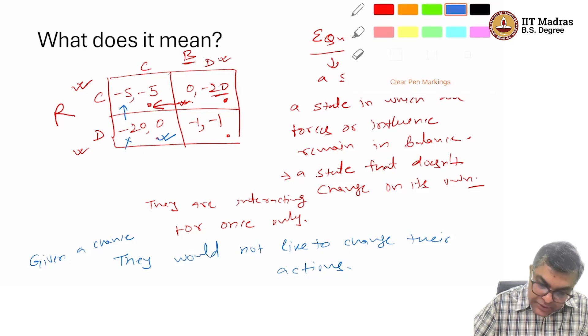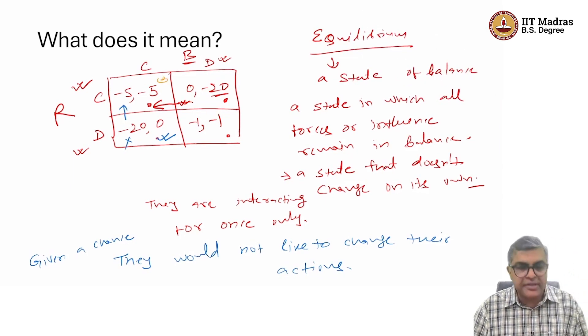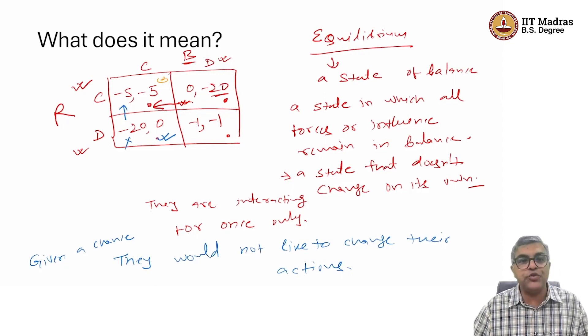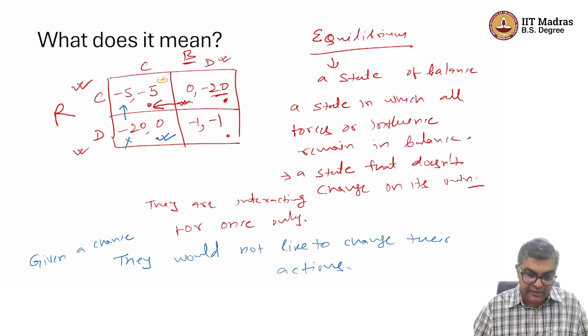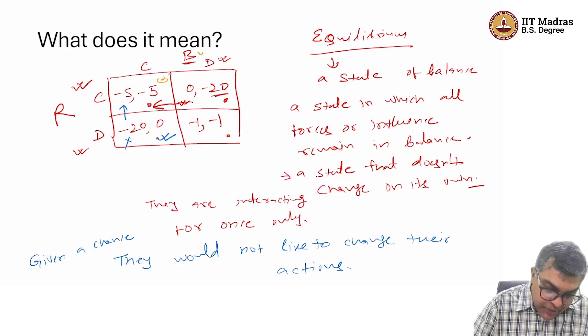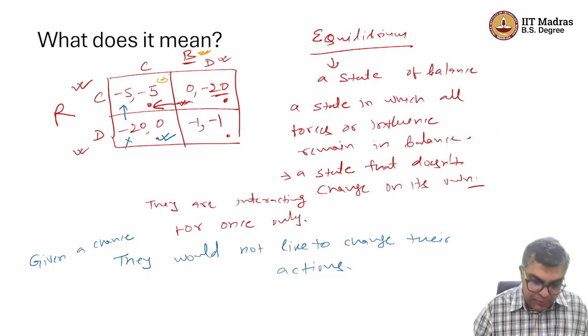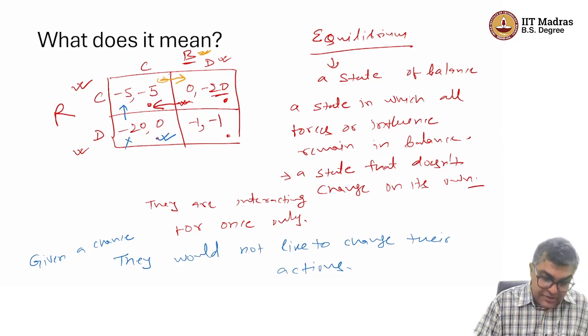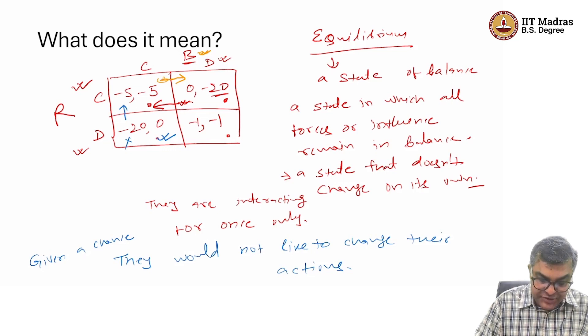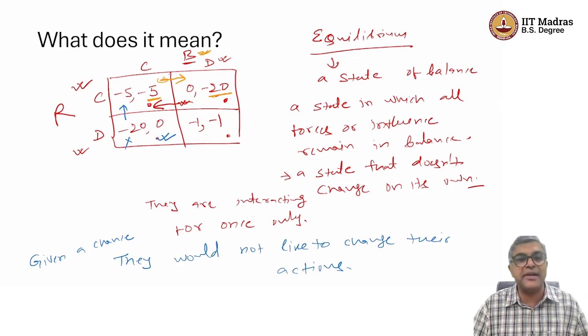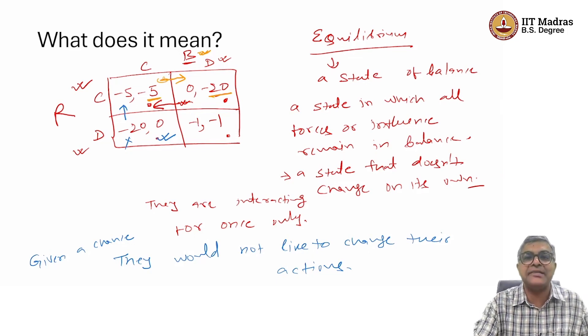How about can we talk about this particular box? Can this be the equilibrium where Ranga is going for confess, Billa is going for confess, they both are getting 5 years in the jail. Given a chance, would Billa like to change the behavior? If Billa changes the behavior or action, what does it mean? That he moves from C to D. Of course, Billa takes Ranga's action as given, Ranga is confessing. So, if Billa changes his action, his jail term will increase from 5 years to 20 years. So, clearly, Billa doesn't have any incentive to change his action.